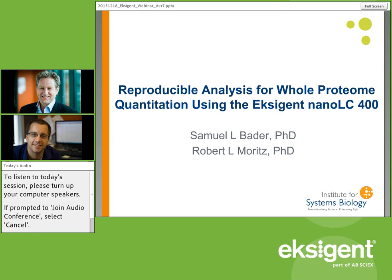He received his PhD from the University of Melbourne in Australia. He then worked for 25 years at the Ludwig Institute for Cancer Research in Melbourne together with Professor Simpson, and he was one of the pioneers of the application of micro and nano LC in proteomics research. In 2006, he set up the Australian Proteomics Computational Facility, for which he served as director until April last year.